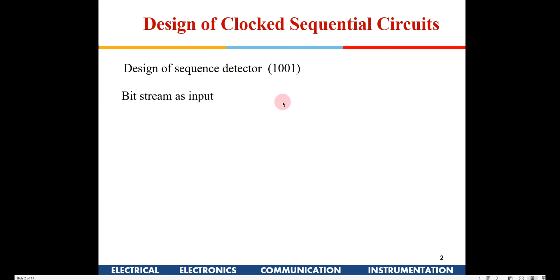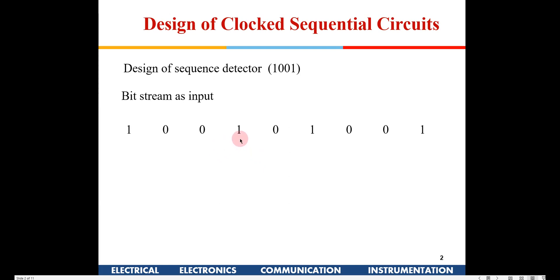What is a sequence detector? Suppose there is an input bit stream coming — 1, 0, 0, 1, 0, 1 — and we are trying to detect if the sequence 1, 0, 0, 1 occurs, and whenever it does, I give the output to be 1. These kinds of things are practically used; for example, you have a PIN for a digital lock. If you press the correct sequence of the PIN, the lock has to release. These kinds of circuits are used in many applications.